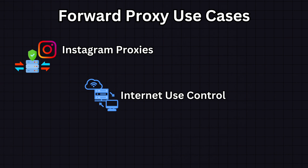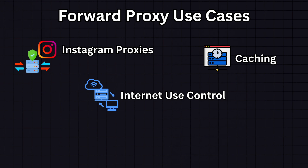Another use case is internet use control and monitoring. Some organizations use forward proxies to monitor and control employee internet usage — they can block access to non-work-related sites, protect against web-based threats, and scan for viruses and malware in incoming content. Forward proxies can also cache popular websites or content, reducing bandwidth usage and speeding up access for users within the network.